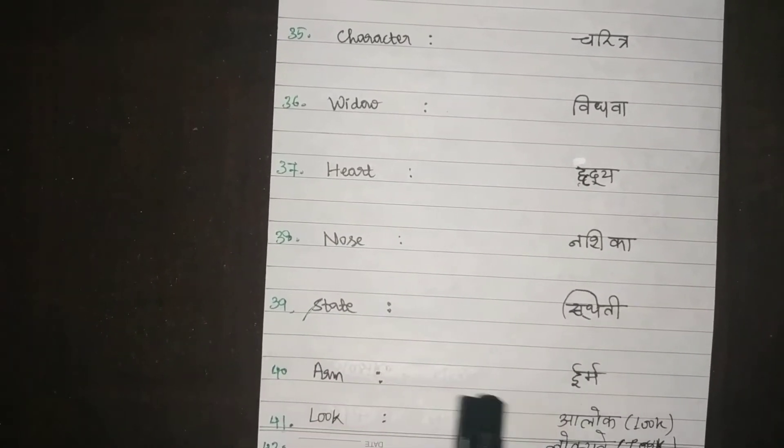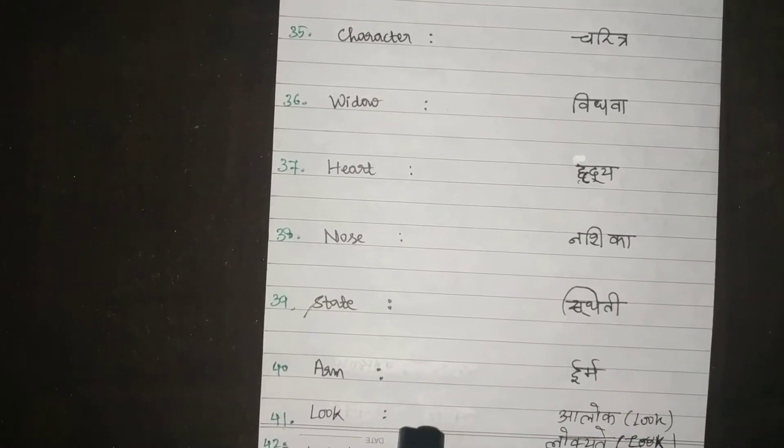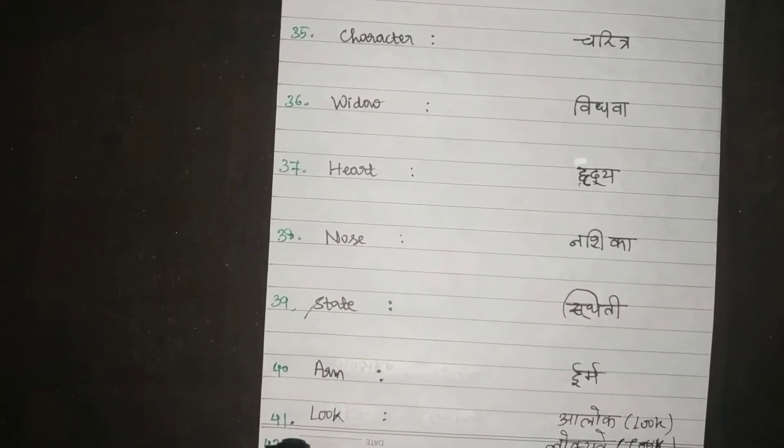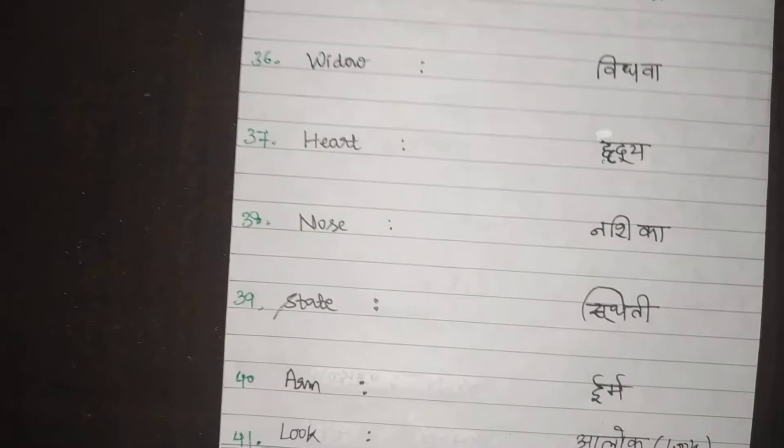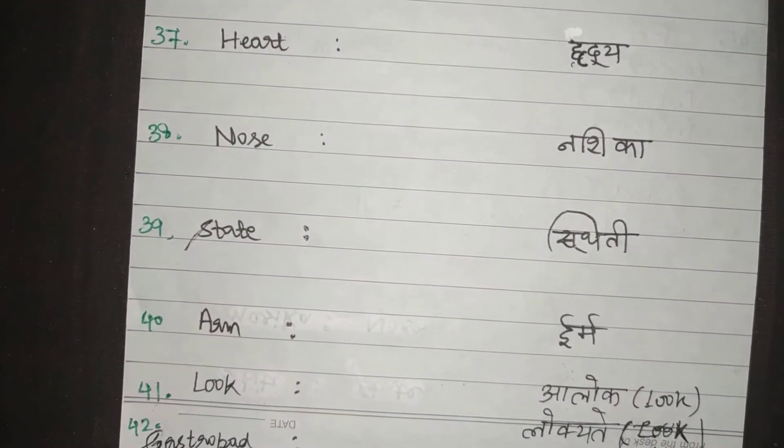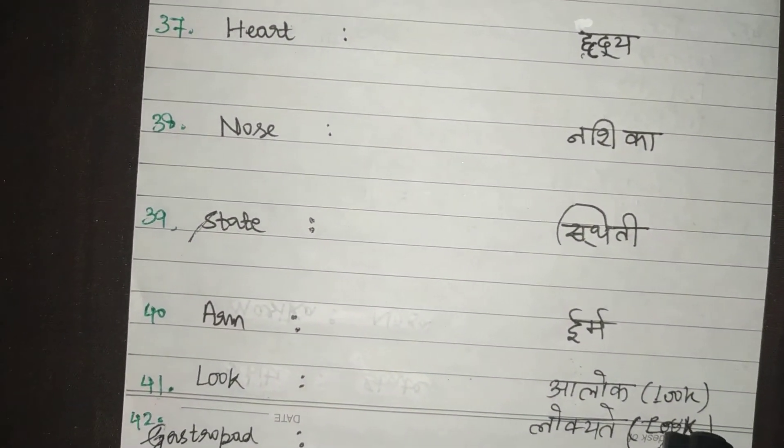Arm has come from Sanskrit word Irma. Look has come from Sanskrit word Alok, Lokyate. Look at.